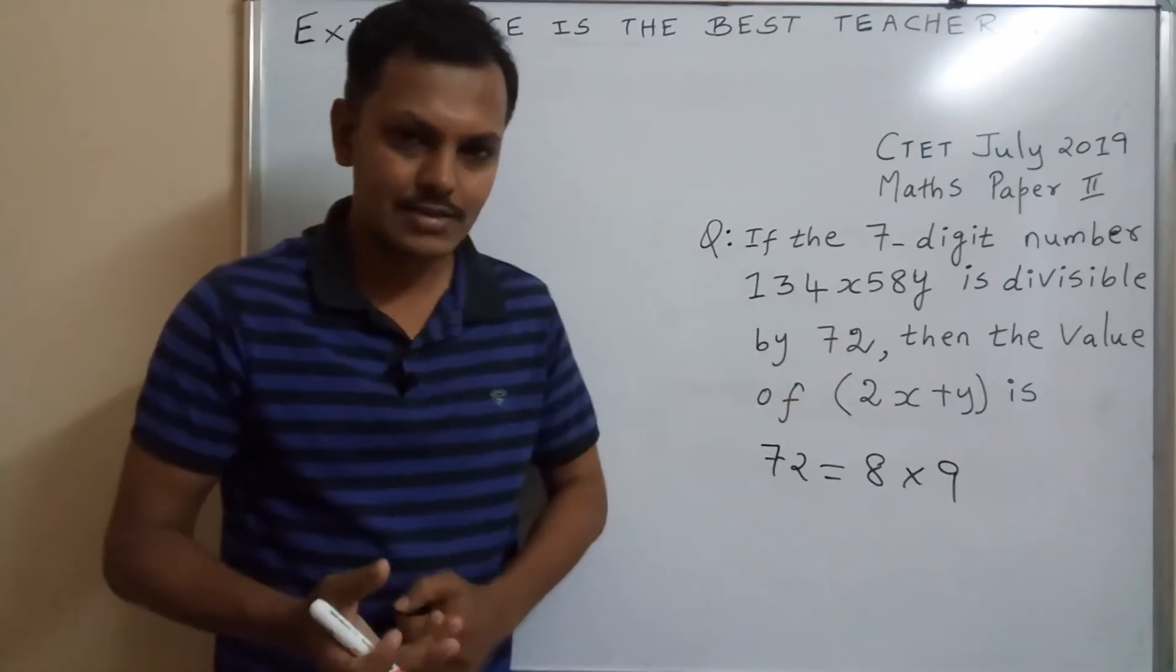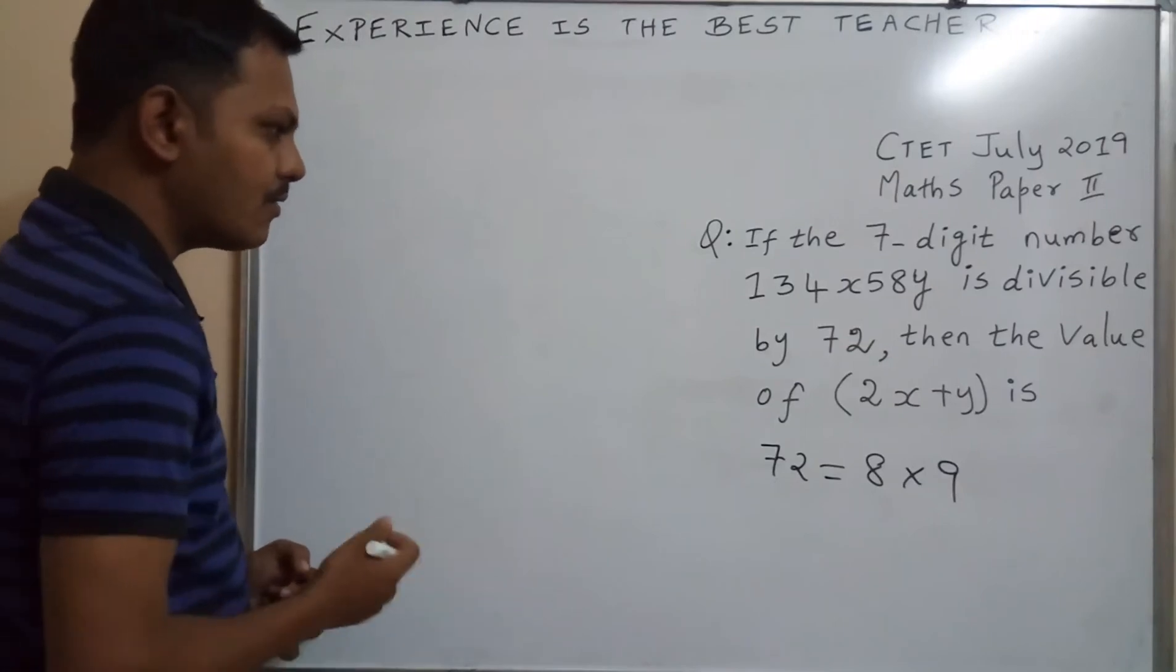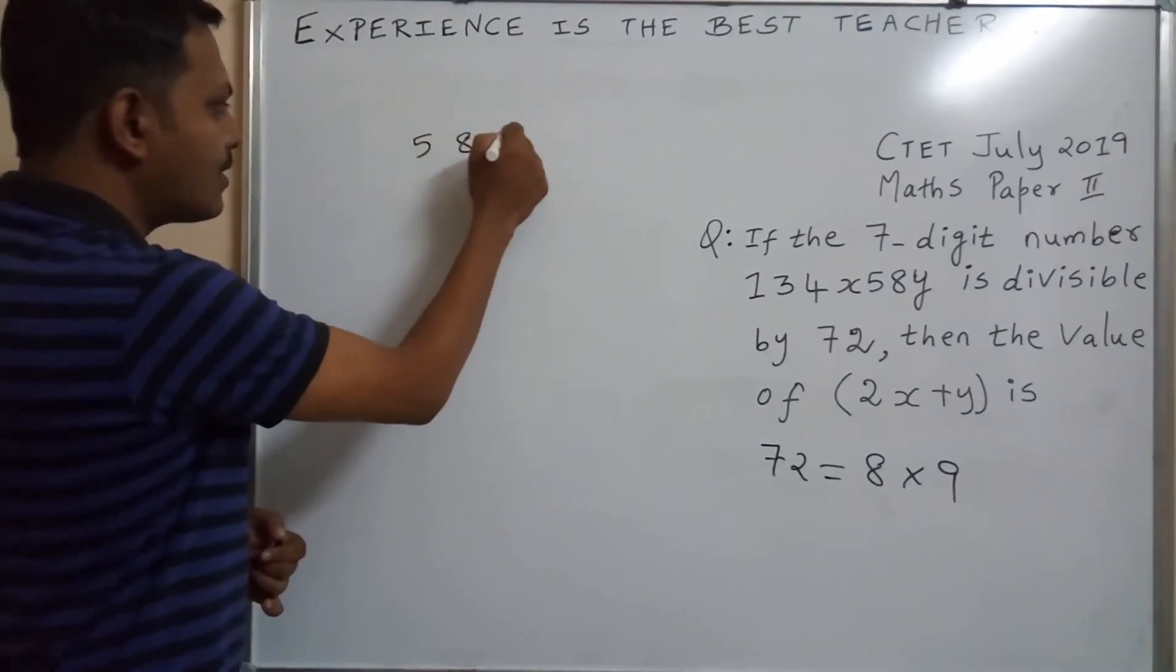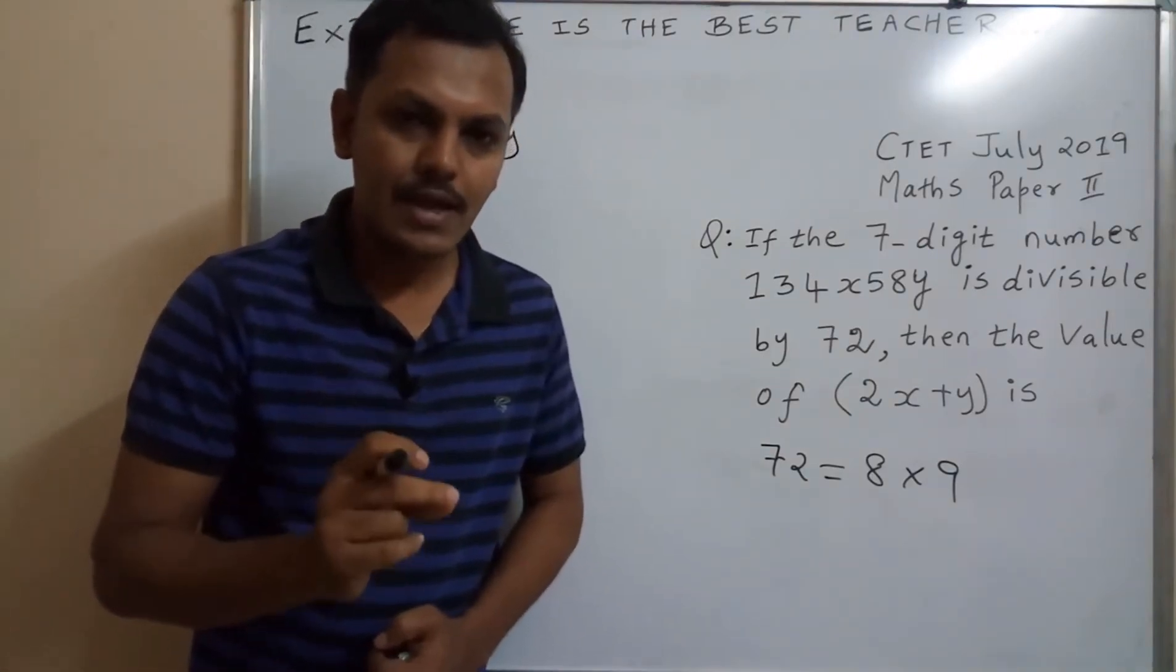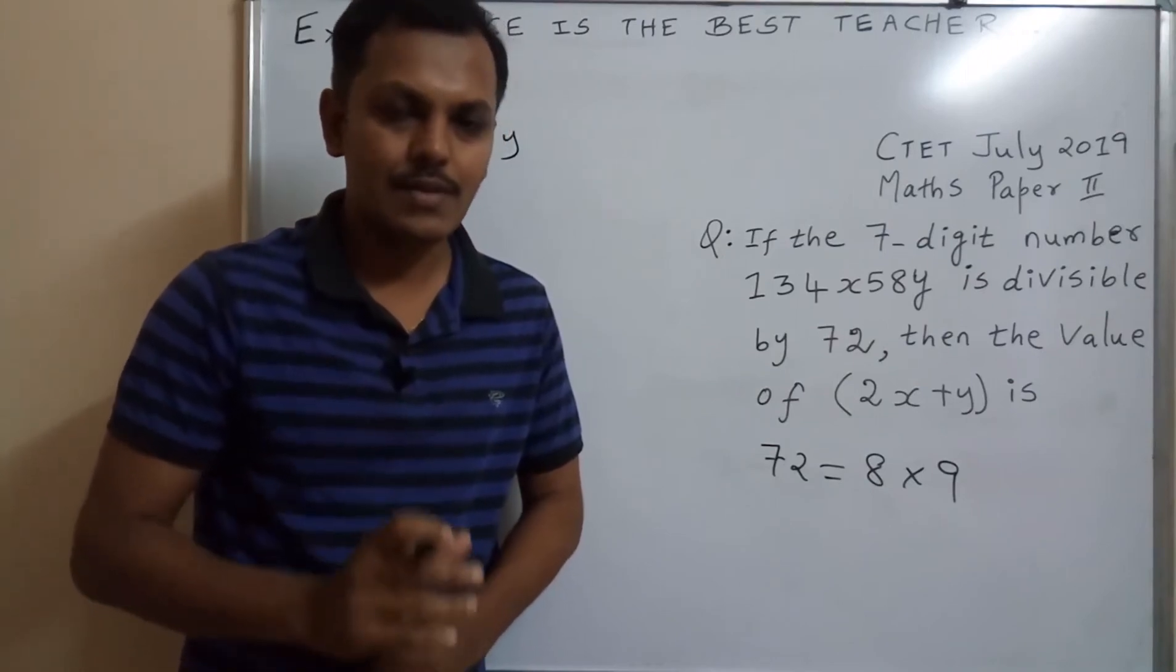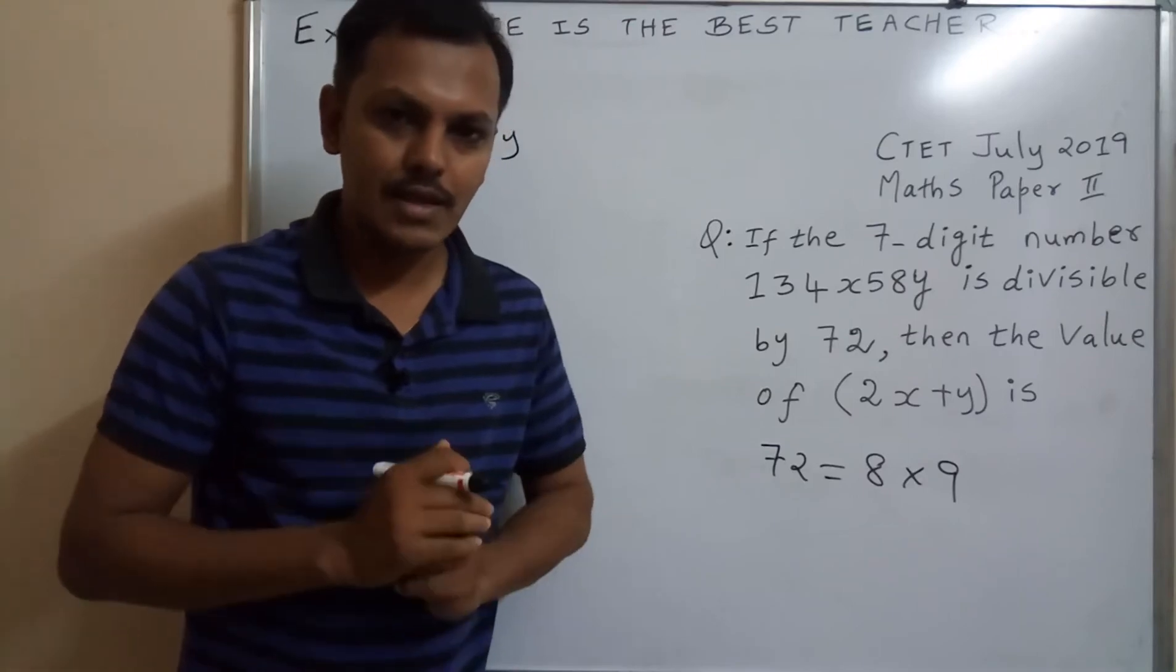First we will find y value. Right here, the last 3-digit number: 5, 8, y. The divisibility rule for number 8 is the last 3-digit number is divisible by 8. Then the particular number, 7-digit or 5-digit or 8-digit, it is divisible by 8.